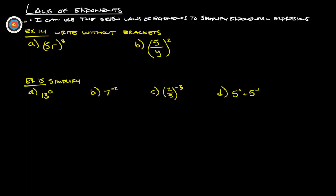Alright, moving on to examples 14 and 15, write without brackets. Anything that doesn't have a power, let's write a 1. We're going to distribute this 3: 3 times 1 and 3 times 1, so that's going to be 5 to the 3rd, R to the 3rd for this one.